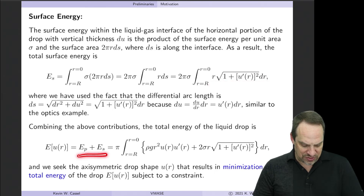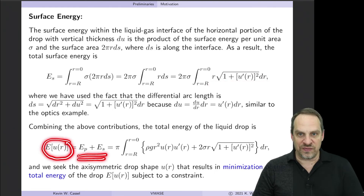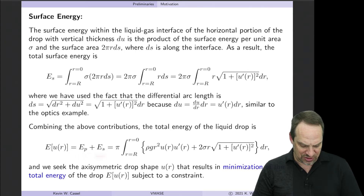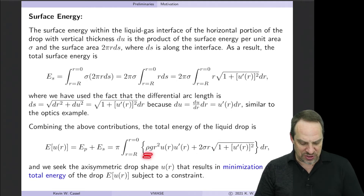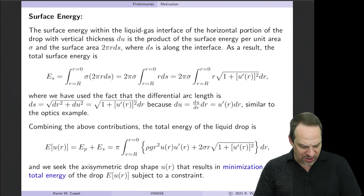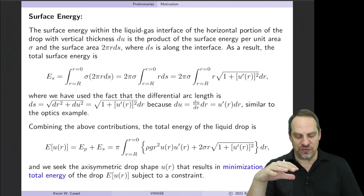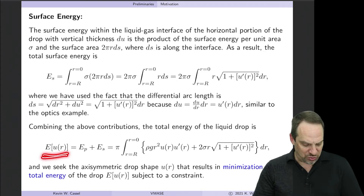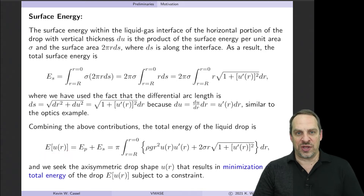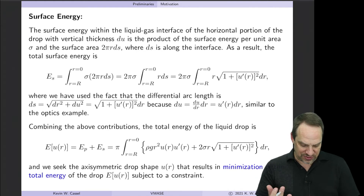We sum the two energies to get the total energy of the liquid drop: the potential energy plus the surface energy. The rho·G term corresponds to potential energy, and sigma to the surface energy. So the shape of the liquid drop, U as a function of R, will be that which minimizes this functional — the U(R) that, when put into this definite integral, produces the smallest value of the total energy of the system.